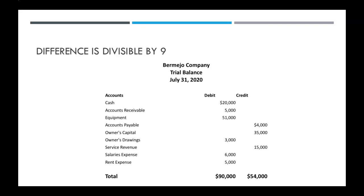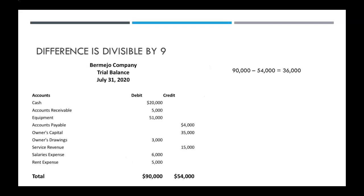Now what about if the difference is divisible by nine? Our total debits are 90,000 and our total credits are 54,000, so the difference is 36,000. Now 36,000 is also divisible by two, so we would first divide it by two and get 18,000. But you'll notice there is not an 18,000 anywhere in our balances. So then we go on to see if our difference is divisible by nine — and 36,000 is divisible by nine — so then we're looking for a transposition error, where you flip around a couple numbers. You would go through your ledger and compare it to all the balances on your trial balance.